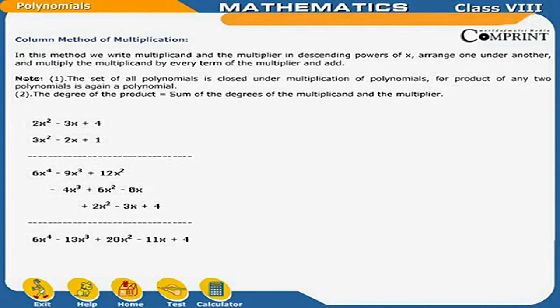Result: 6x⁴ minus 13x³ plus 20x² minus 11x plus 4. Note 1: The set of all polynomials is closed under multiplication — the product of any two polynomials is again a polynomial. Note 2: The degree of the product is equal to the sum of the degrees of the multiplicand and the multiplier.